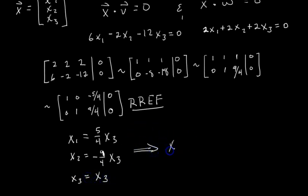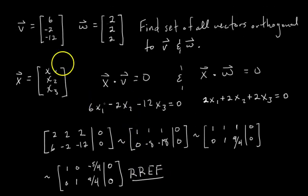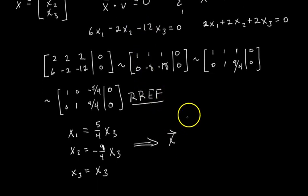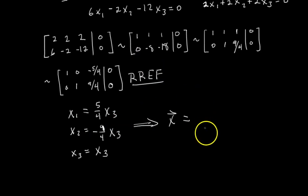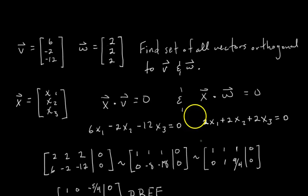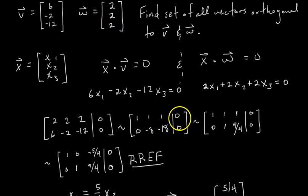This means our vectors X, which we were defining to be orthogonal to both V and W—this is what we want—take the form, given this parametrization: x3 times [5/4, -9/4, 1]. Here's our third pencil. Any scalar multiple of this vector is going to be orthogonal to both V and W.